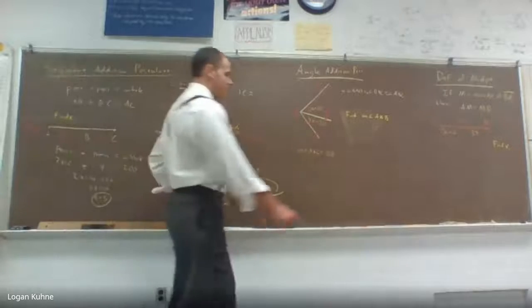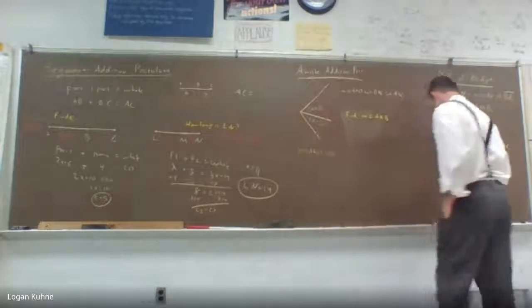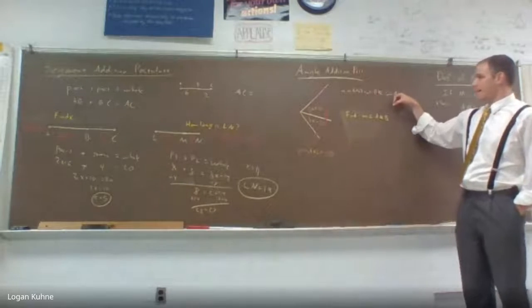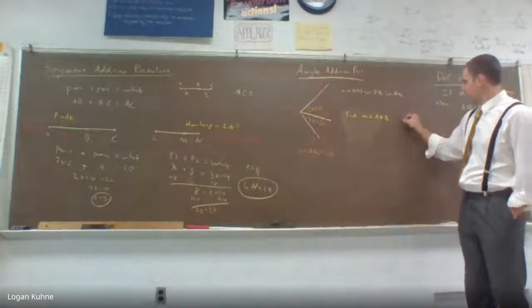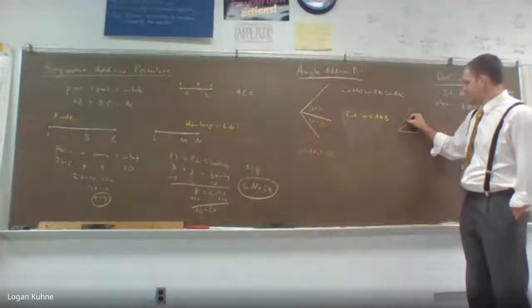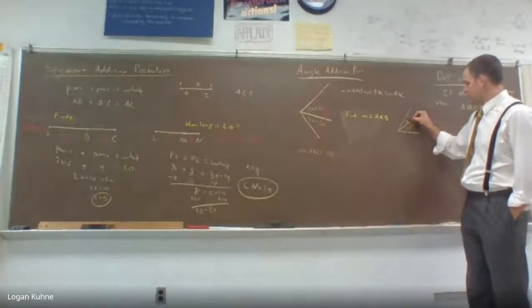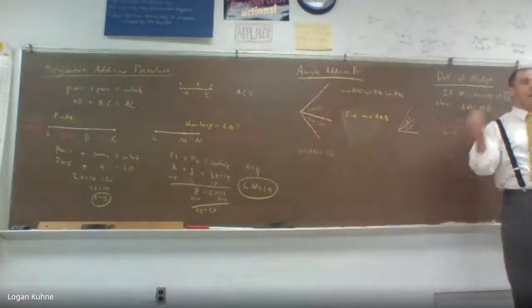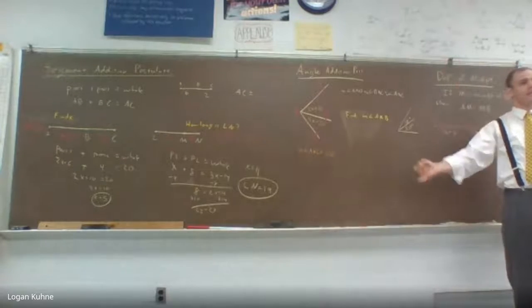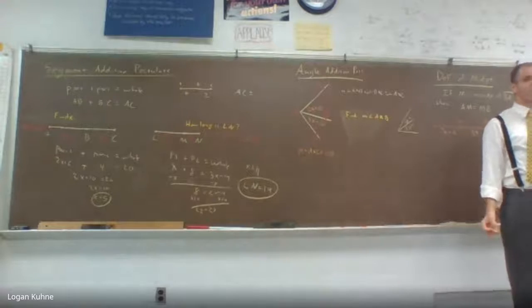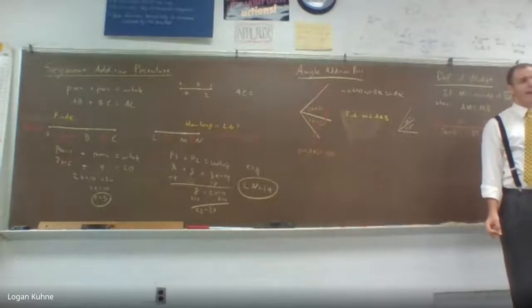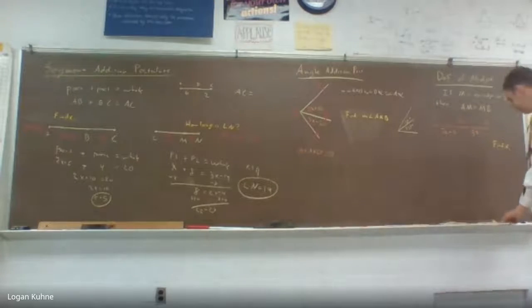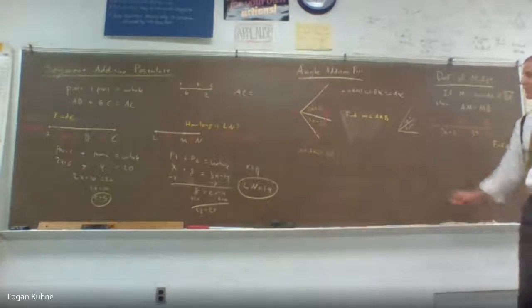Guess what? Angle addition postulate. Angle AXB plus angle BXC is equal to AXC. Again, if I said this is 10 degrees and this is 20 degrees, how much is the whole angle? 30. Yes, it's a big fancy name for add the two parts together and you get the whole thing.